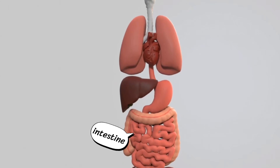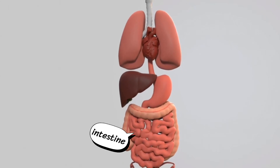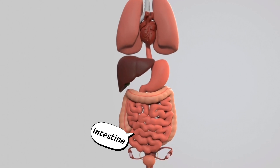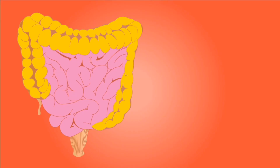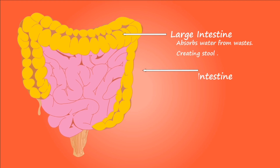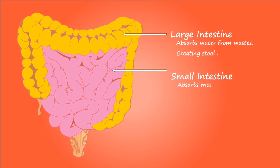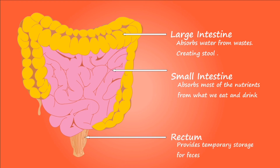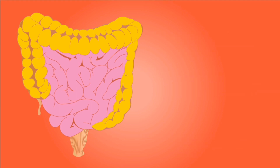Aaj aap padhenge maanav shareeer ke intestine ke baare mein. The intestine is a muscular tube which extends from the lower end of your stomach to your anus, the lower opening of the digestive tract. It is also called the bowel or bowels.